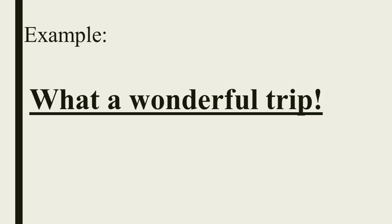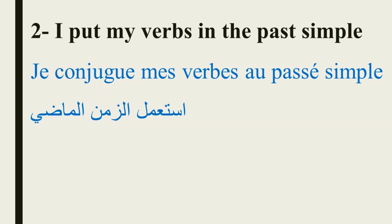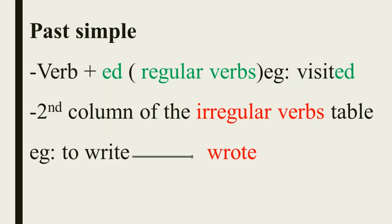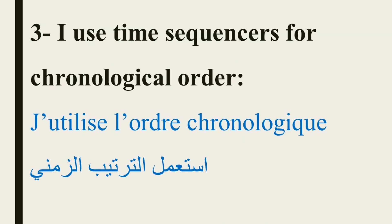Step 2: I conjugate my verbs in the past simple. To put the verbs in the past simple, we have regular verbs and irregular verbs. With regular verbs, we put verb plus -ed. For example, 'to visit' becomes 'visited.' With irregular verbs, we use the second column of the irregular verbs table. For example, 'to write' becomes 'wrote.'